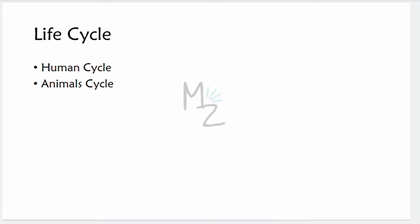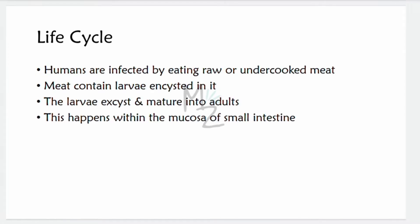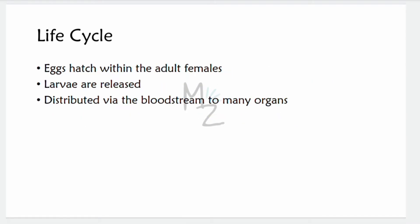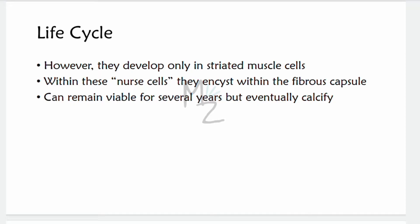The life cycle has two stages — a human cycle and an animal cycle — but I'll discuss them together. Humans are infected by eating raw or undercooked meat, pork in particular, containing larvae. The larvae excyst and mature into adults within the mucosa of the small intestine. Eggs hatch within the female and larvae are released, distributed via the bloodstream to many organs, but they develop primarily in striated skeletal muscles and can also target cardiac muscle.